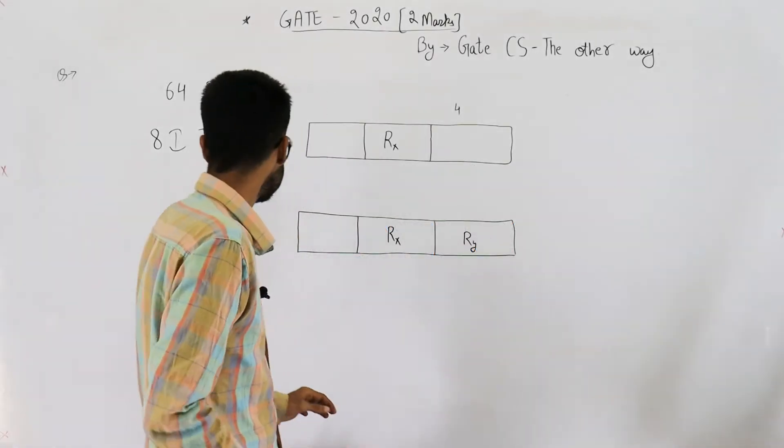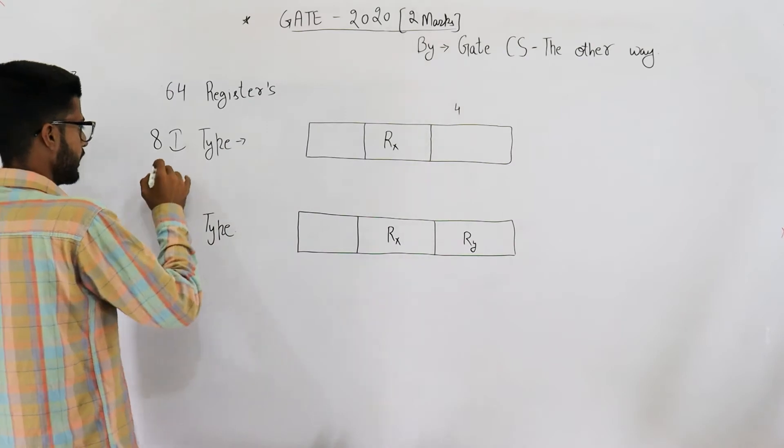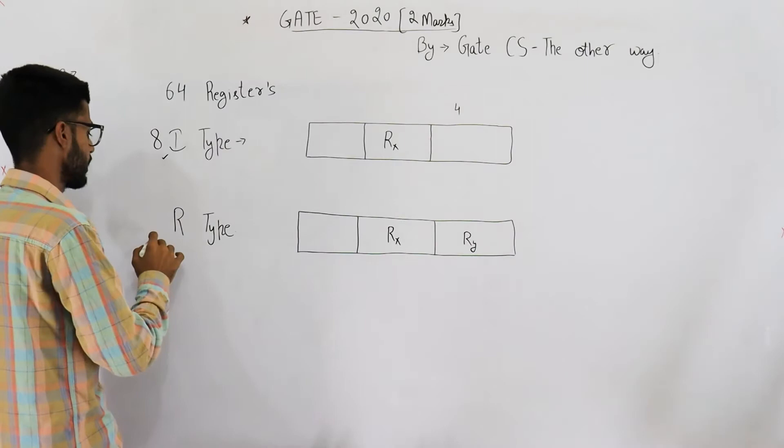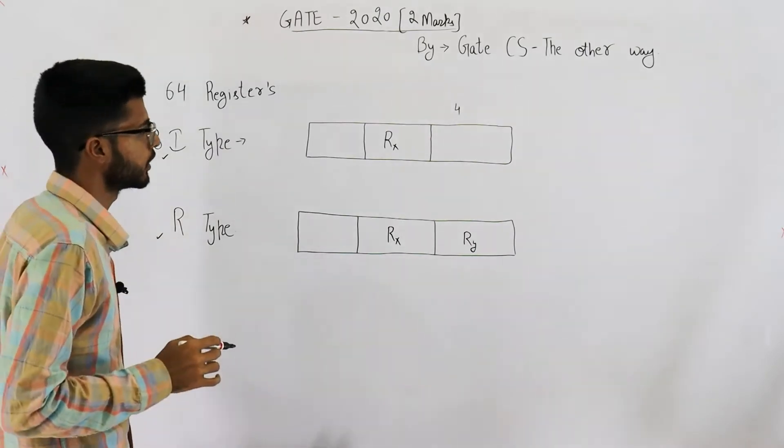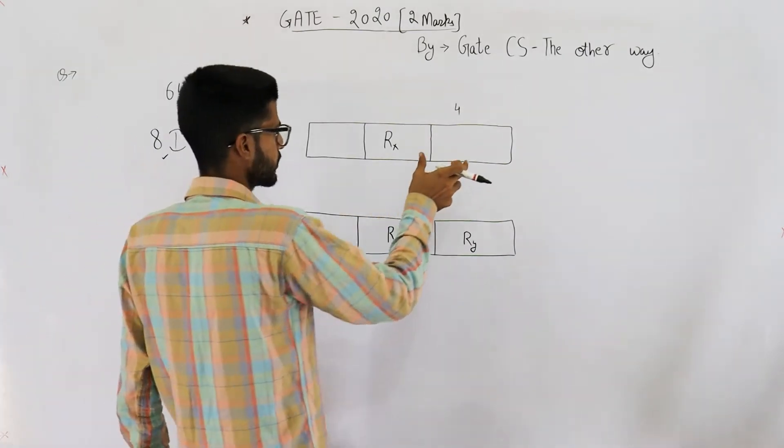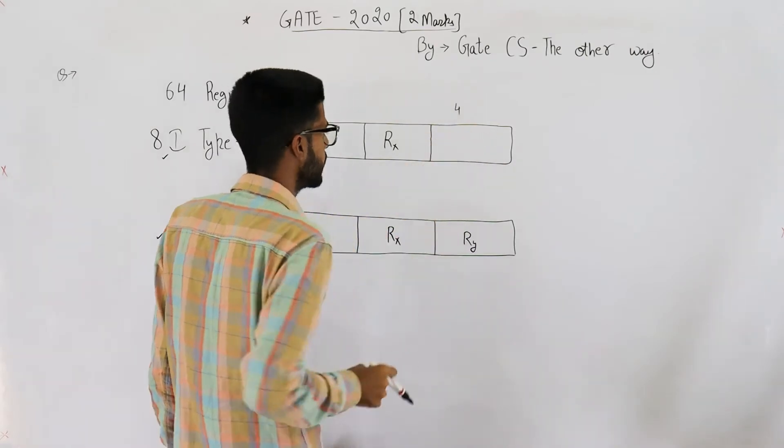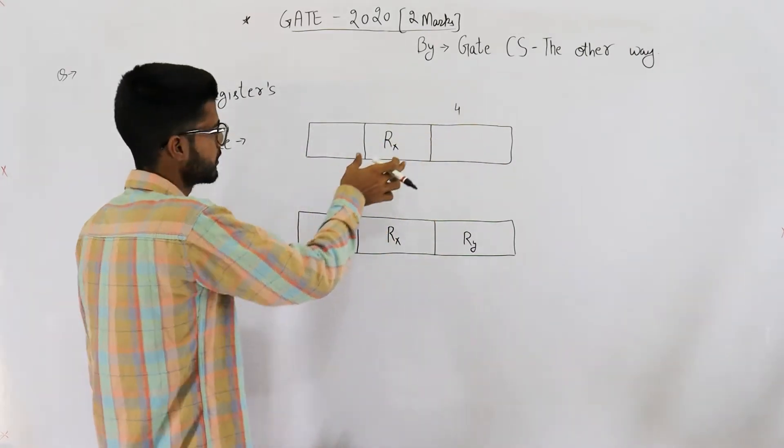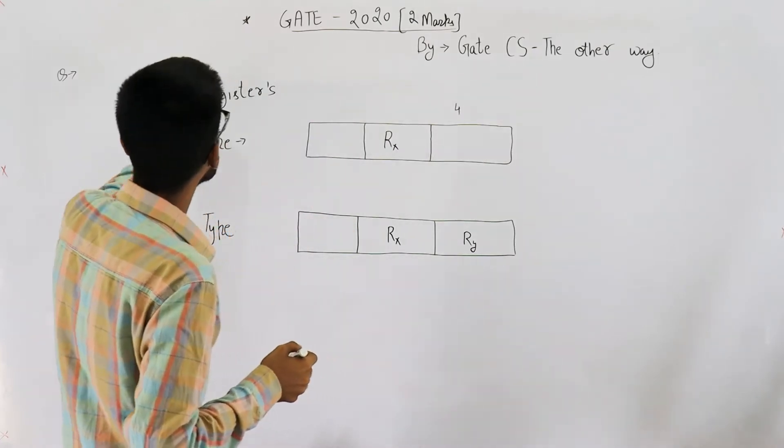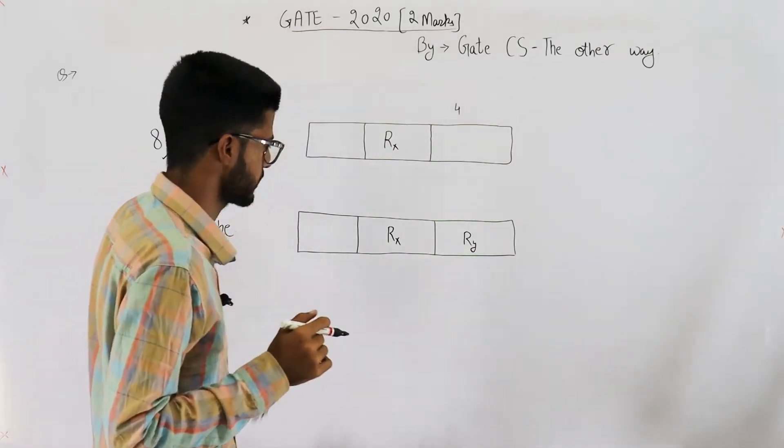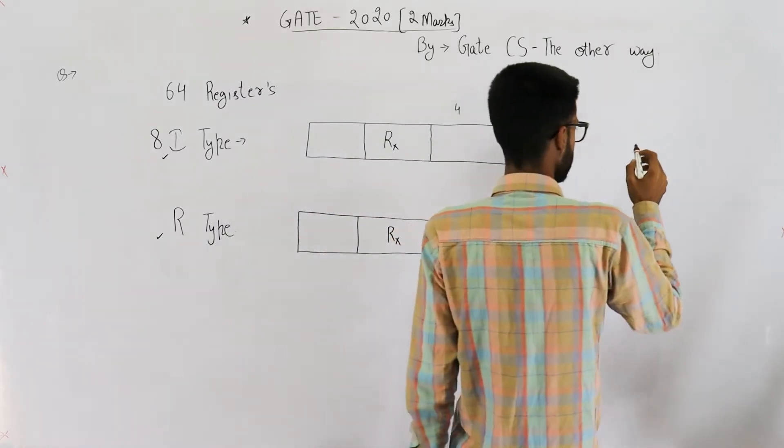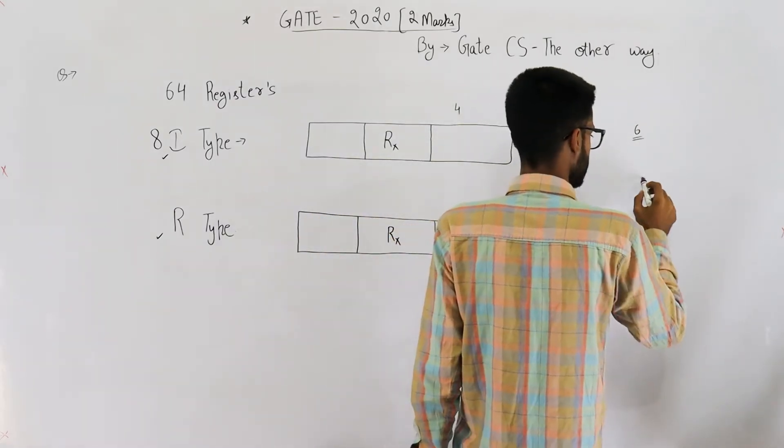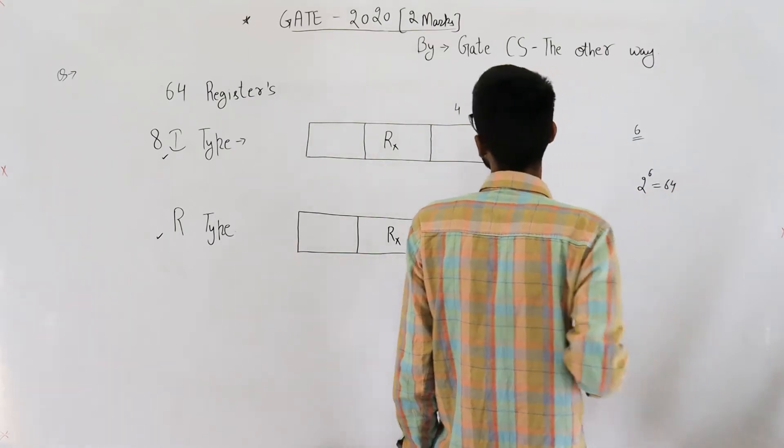So you are given, we have eight I type instructions. How many maximum R type instructions are possible? Where I type instruction uses this 4-bit immediate value and one register, one register is specified in the instruction. Now total 64 registers are present in our CPU. That means specifying one register needs six bits because two to the power six is 64.